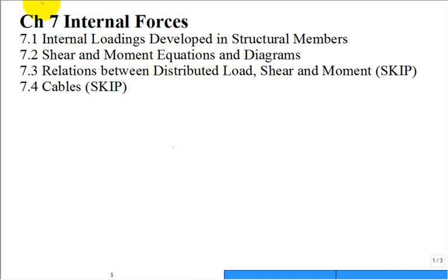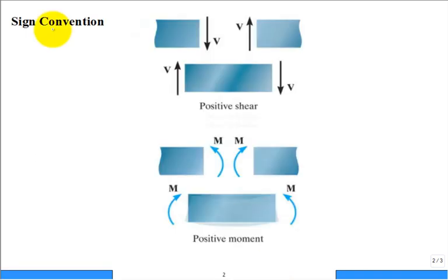So this is our second and last lecture on Chapter 7. We have an introduction to the topics of internal forces and essentially beams, which are one-dimensional entities. Last time we introduced this sign convention.